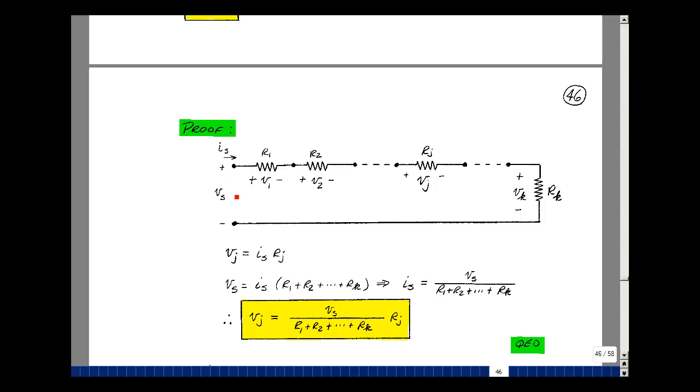So the voltage Vs is equal to Is times R1, Is times R2, all the way through Is times Rk. You can pull out that common Is, and now we can substitute in for Is over here. So Vj is equal to Is times Rj. Just interchange these two, and you have the theorem on the previous page.